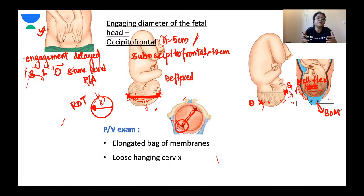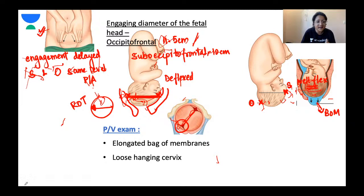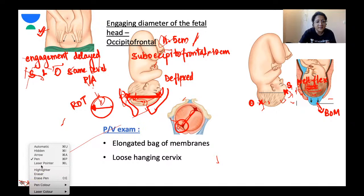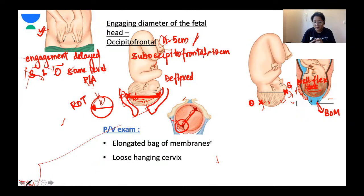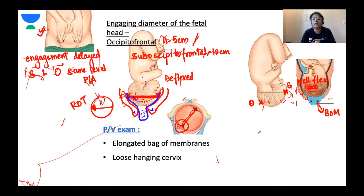With progressive flexion and good uterine contractions, smaller diameters come into play and the head rotates anteriorly, provided the size and shape of the pelvis is also favourable. There is going to be anterior rotation of the head. Starting from ROP, the occiput rotates forward: ROP becomes ROT, then ROA, then direct occiput anterior — total of three-eighths of a circle long anterior rotation. Once it becomes occipito-anterior, further labour progresses like in a normal occipito-anterior position.